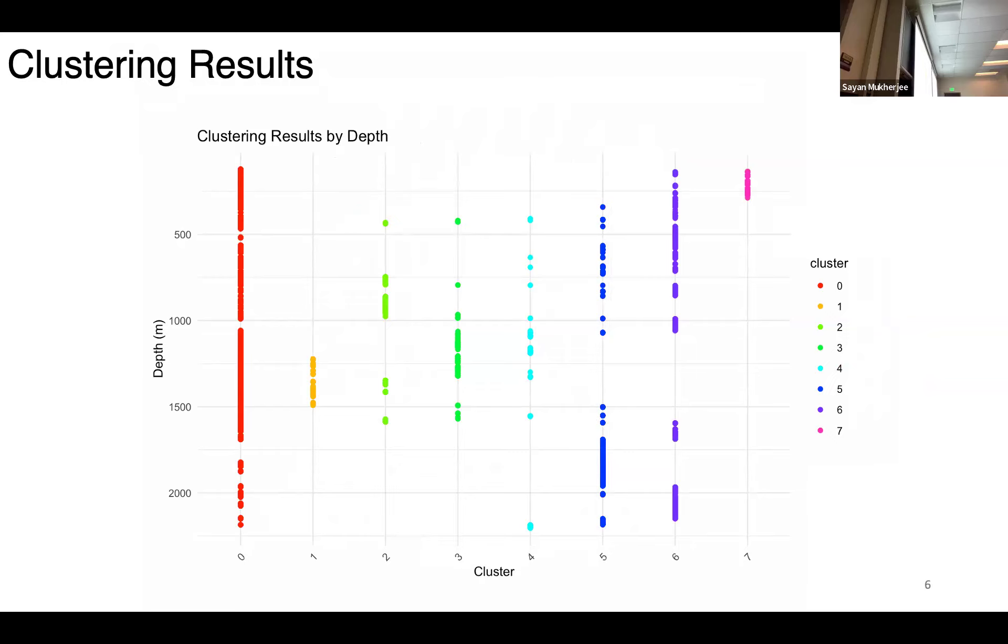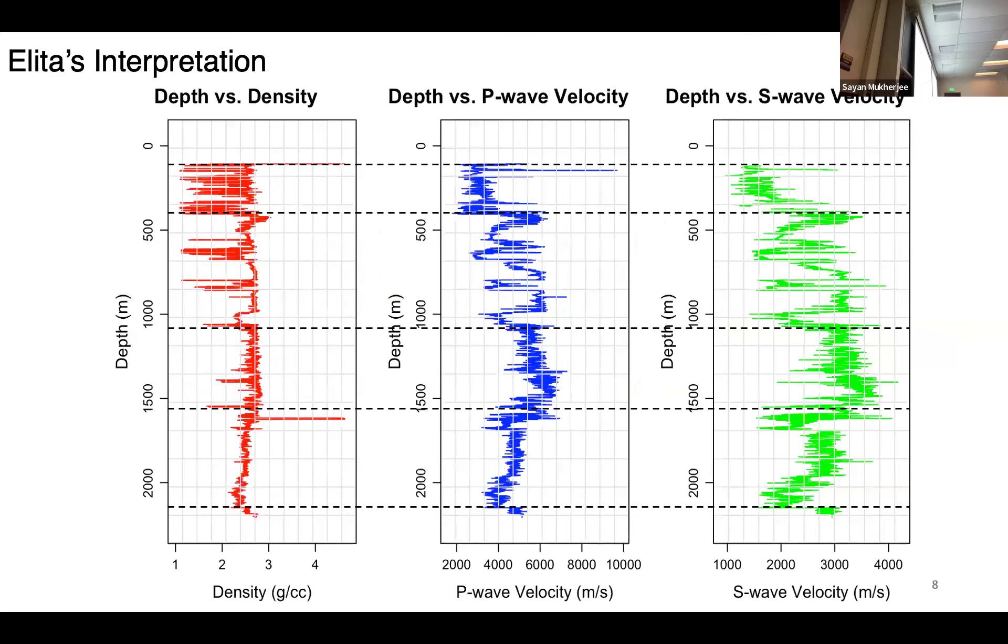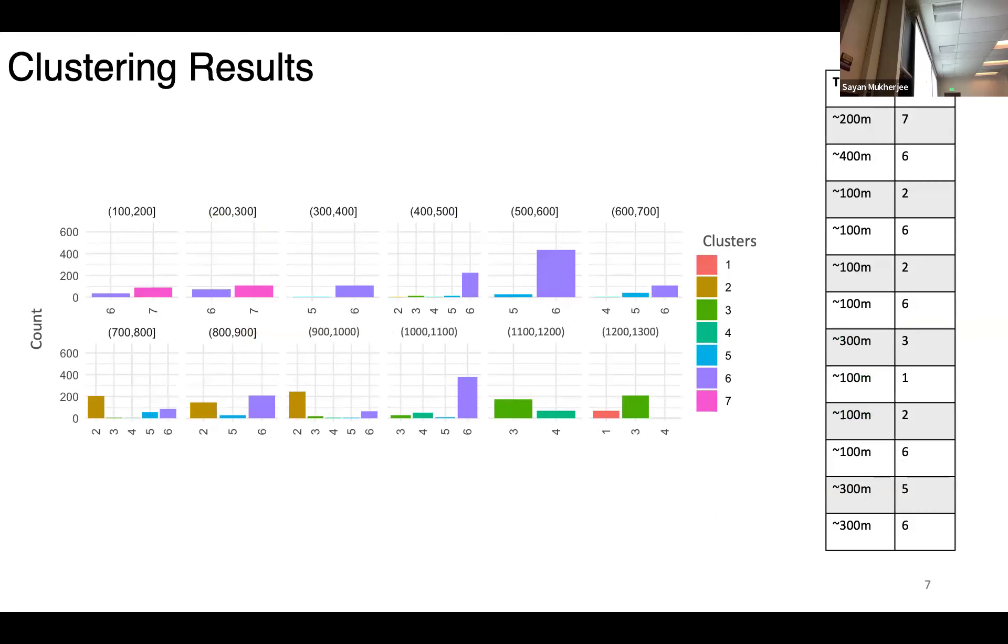Here what we see is this is basically the noise that the HDBSCAN has identified. From one through seven, we see that it has identified a cluster with a respective depth. We see that this cluster has a respective depth, then this cluster has a respective depth, but then there are some clusters with overlapping depths.